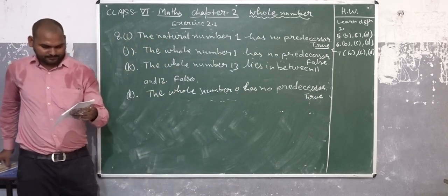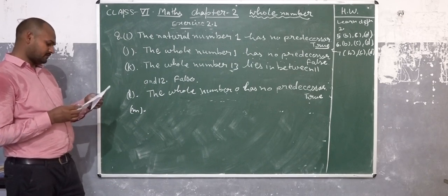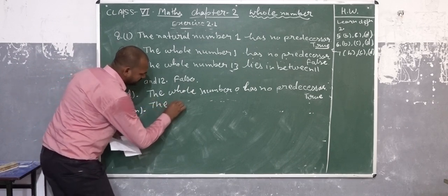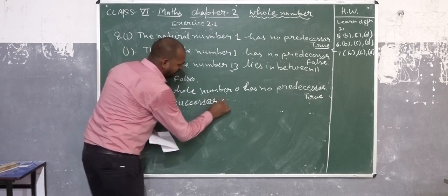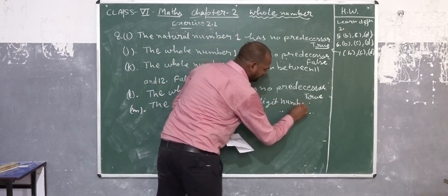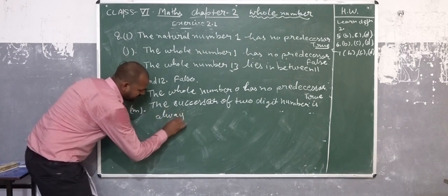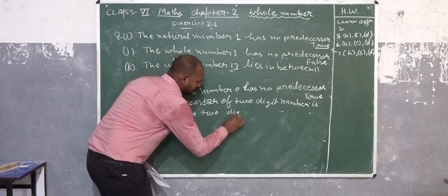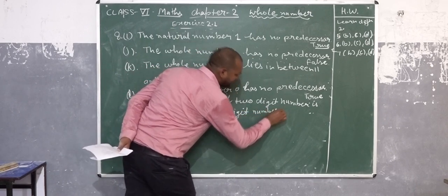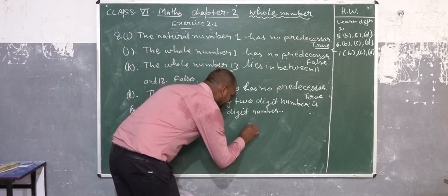Last part, M. The succession of 2-digit number is always a 2-digit number. This is very interesting. The succession of 2-digit number, the smallest and the greatest. 2-digit smallest number is 10, 2-digit largest number is 99.